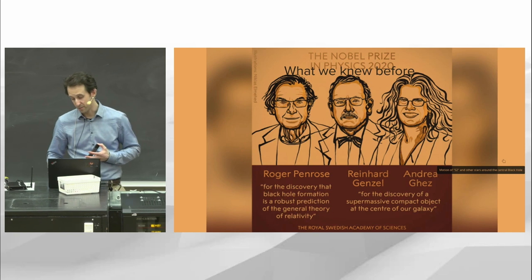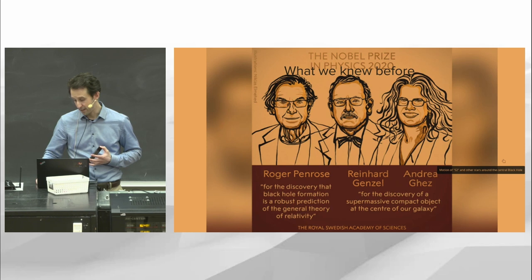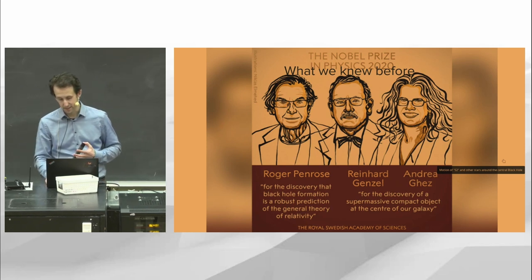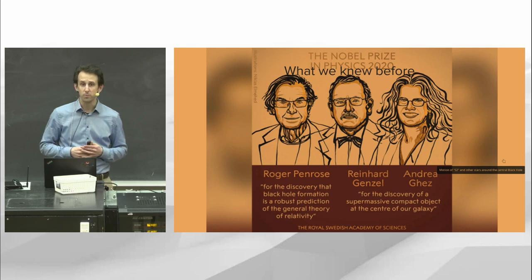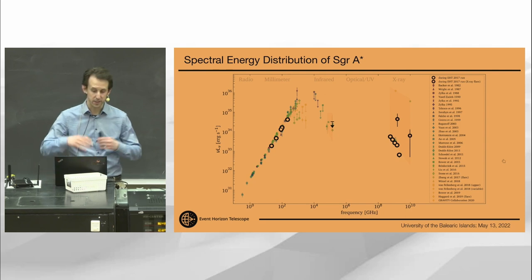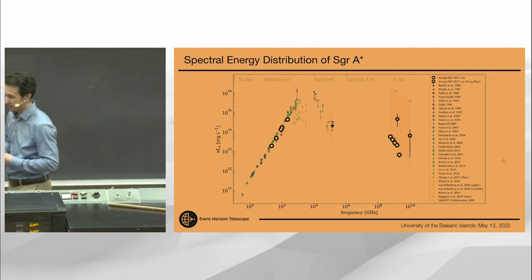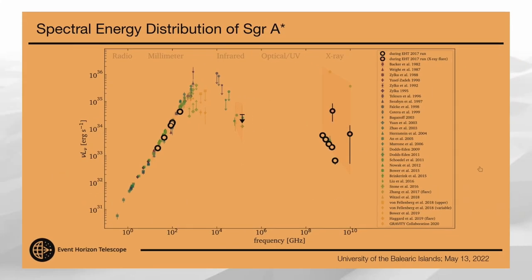These long-term observations were awarded with a Nobel Prize in 2020. In the citation of that Nobel Prize, there was the statement that observations with the EHT will be very important to confirm this finding further. Here's the spectral energy distribution showing that Sagittarius A* has been studied extensively. When I say it doesn't emit any light, I mean it is very, very dim — we've tried over a very long range of frequencies and there is just not a lot of light coming from the source. It is very dark.